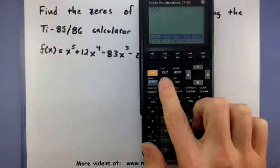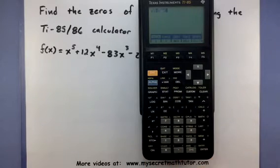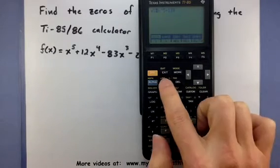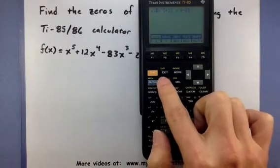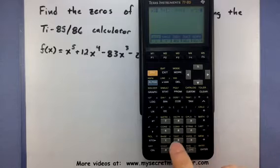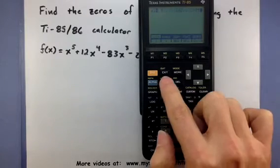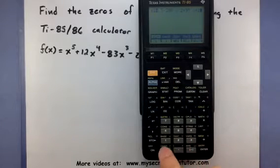Alright, and here's where we can type it in. x to the 5th power plus 12x to the 4th power minus 83x to the 3rd minus 200x squared plus 95x plus 205.